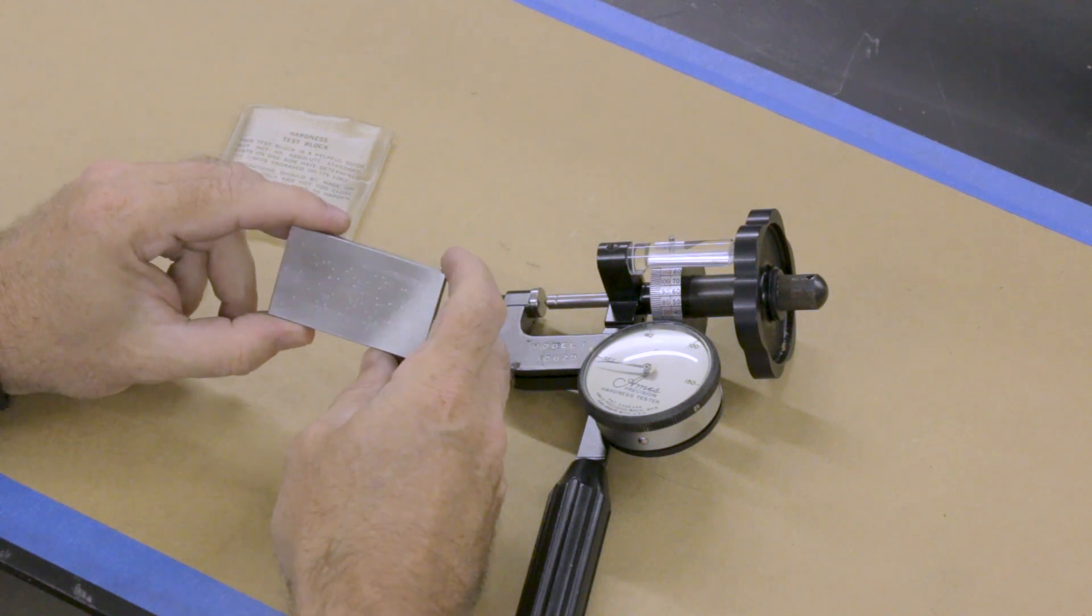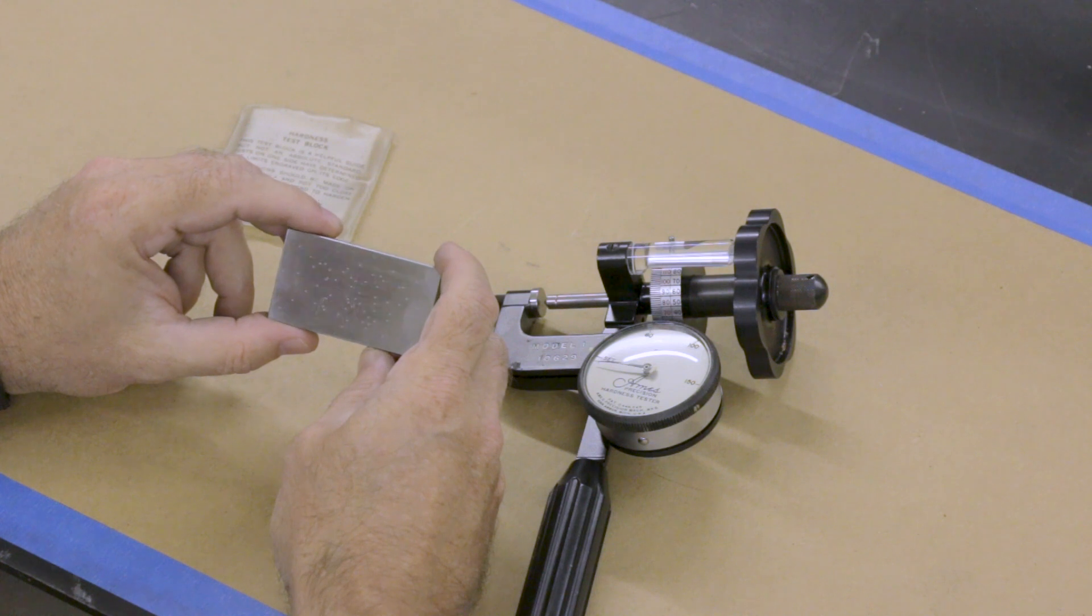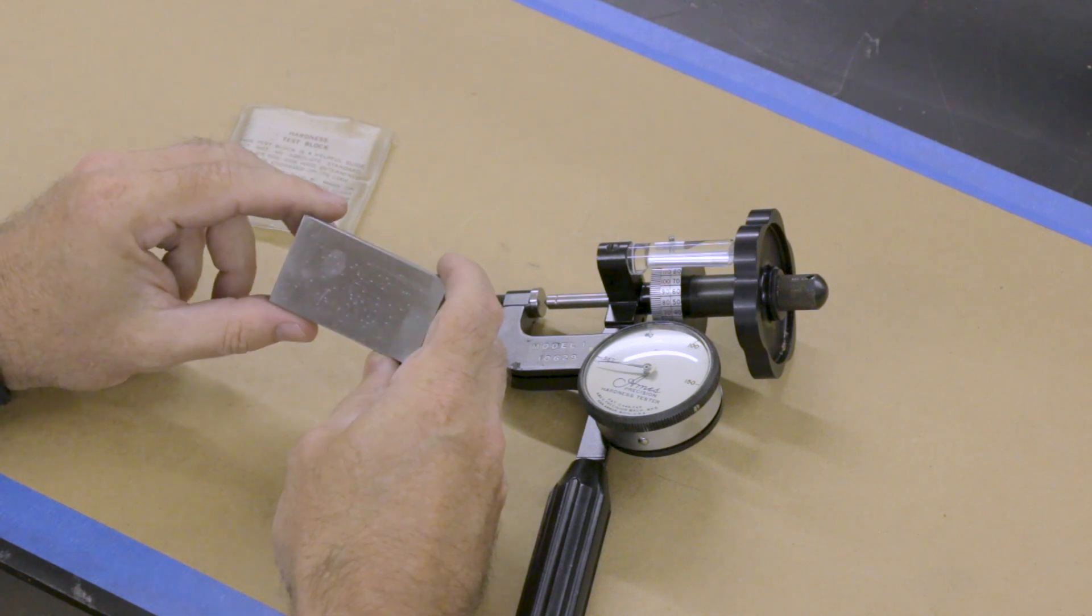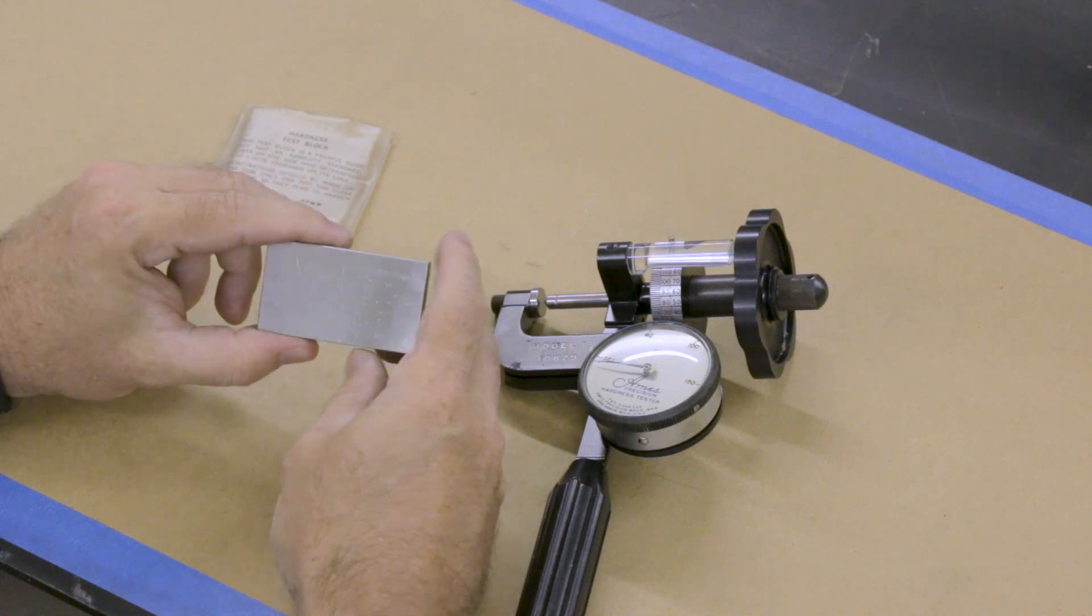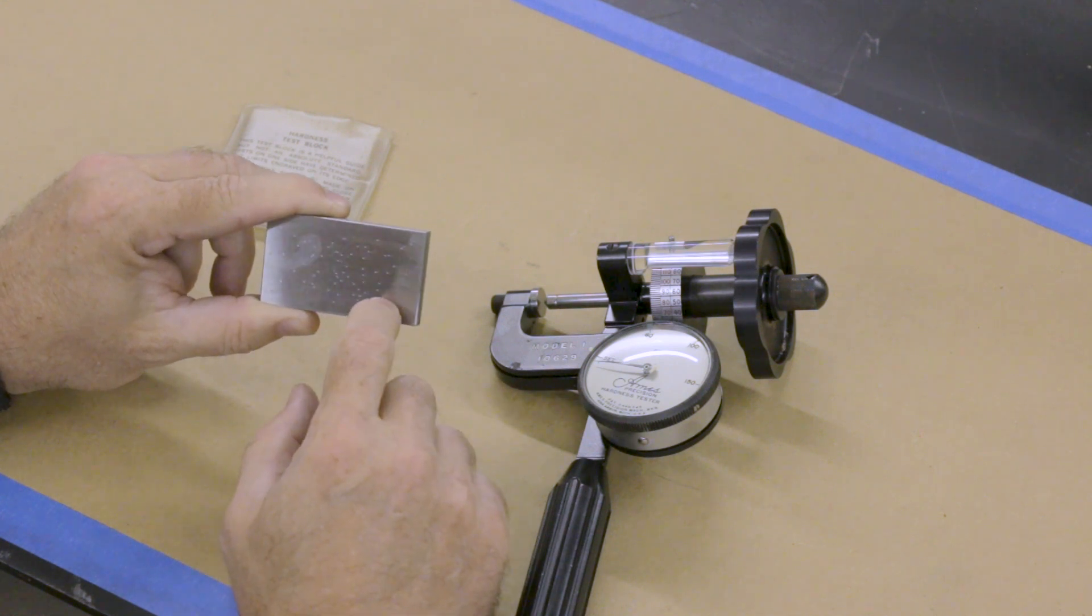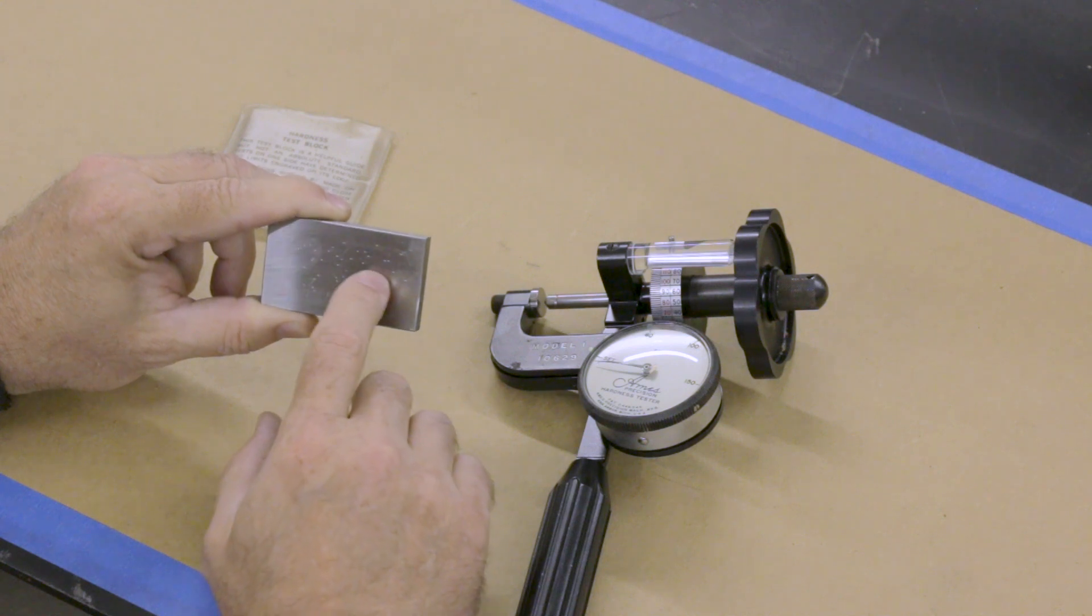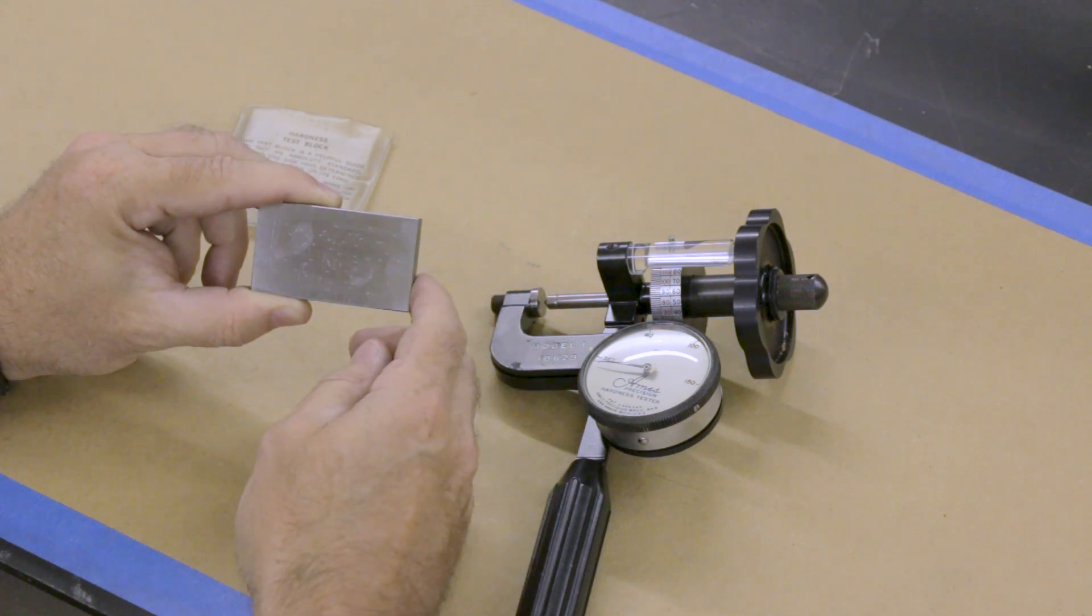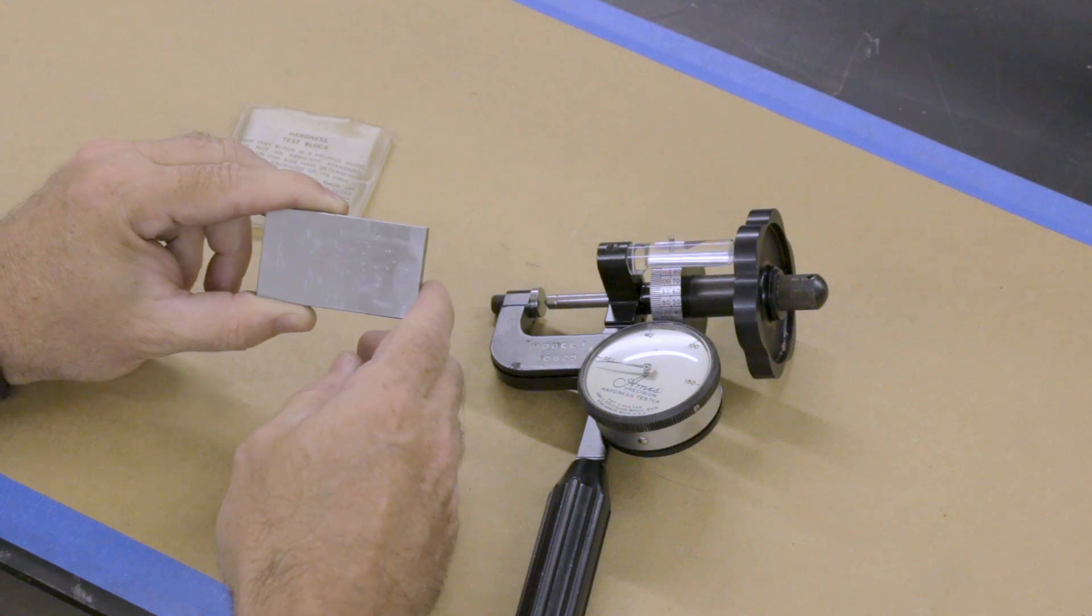Another quick tip is, when you use these test blocks, each time you test, whether on the block or on your knife blade, you should never have two tests within three diameters of the dimple. So basically, whatever the diameter of the dimple, say this is five thou, you should punch fifteen thousandths away from that hole. And that's just to keep the steel from mushrooming into the previous crater that you created.